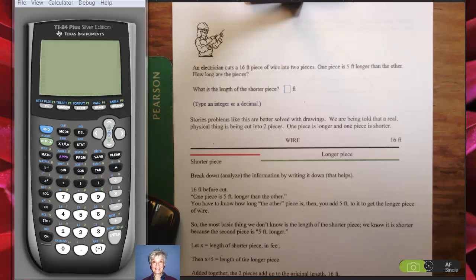Hi, this is Barbara Rademacher and we're now going to do a wire problem. These are pretty traditional in algebra. An electrician cuts a 16-foot piece of wire into two pieces. One piece is five feet longer than the other. How long are the pieces?